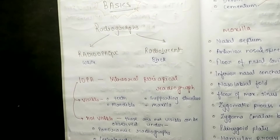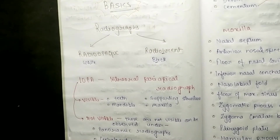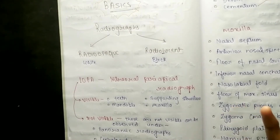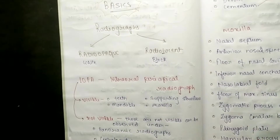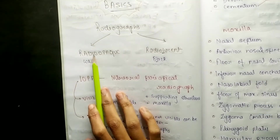When we look at a radiograph, the basics we have to deal with are: you need to know radiopaque and radiolucent. Radiopaque areas appear white and radiolucent areas appear black on the radiograph. A simple way to remember: 'L' in radiolucent stands for 'black' - L is the connection.